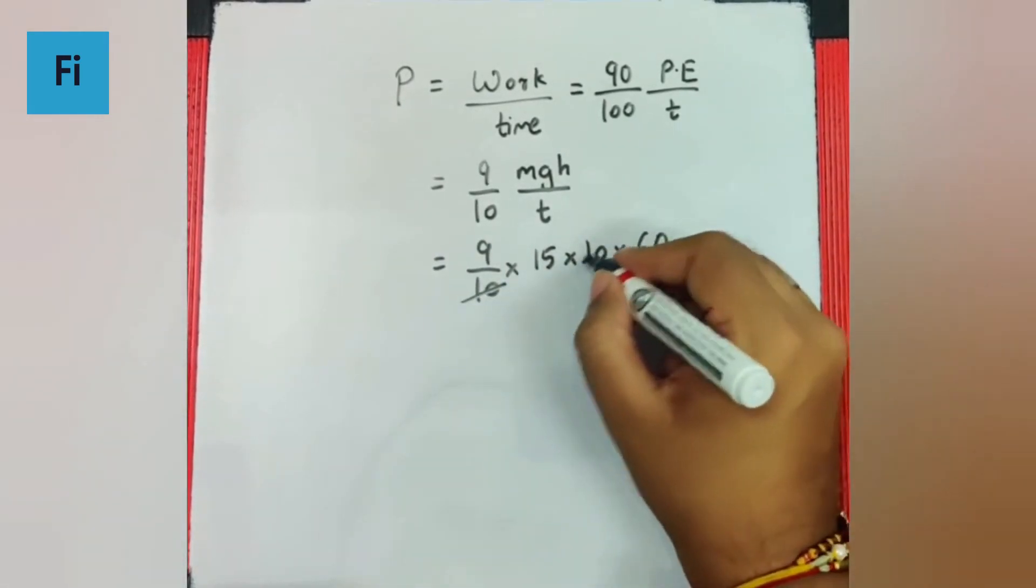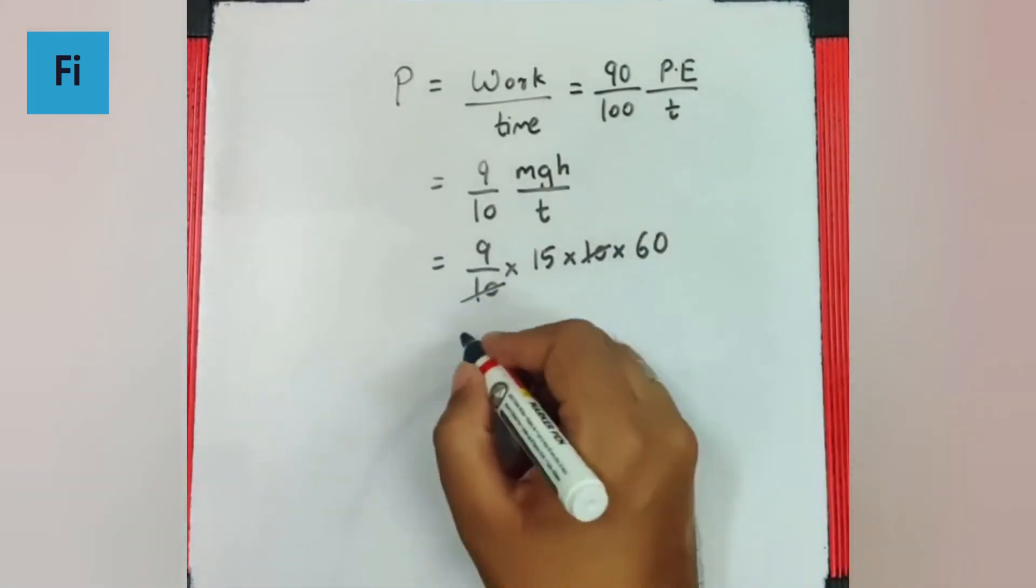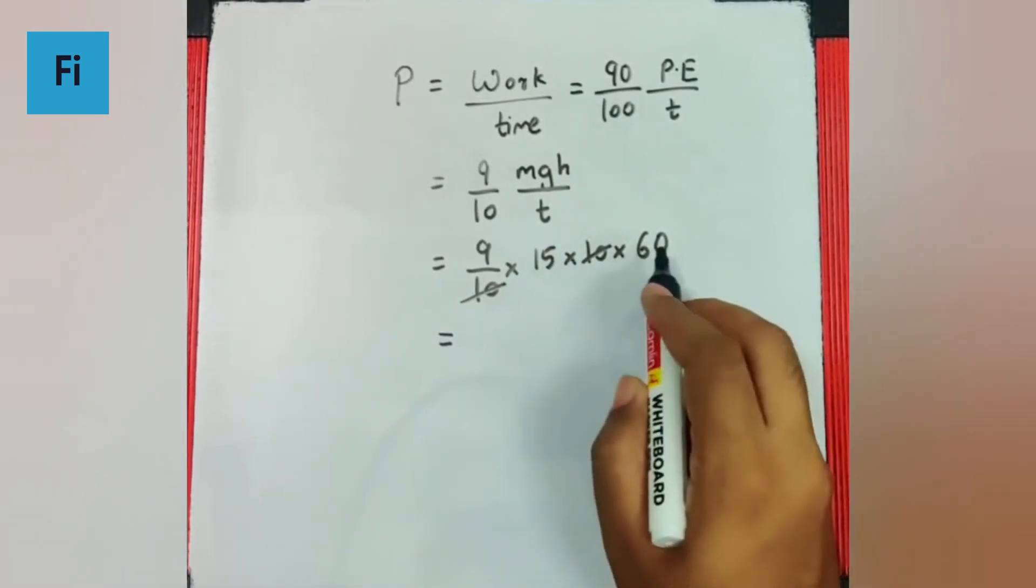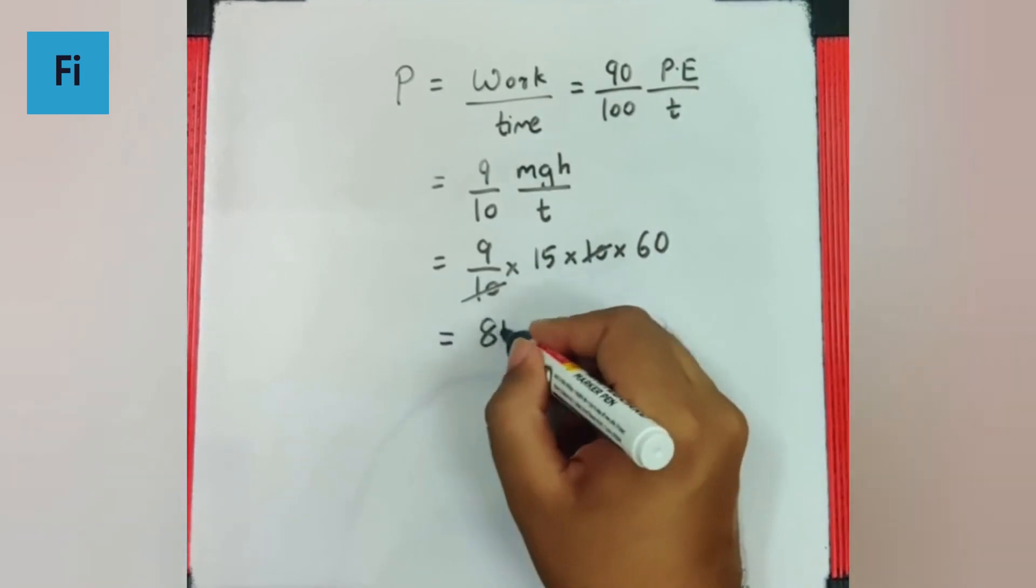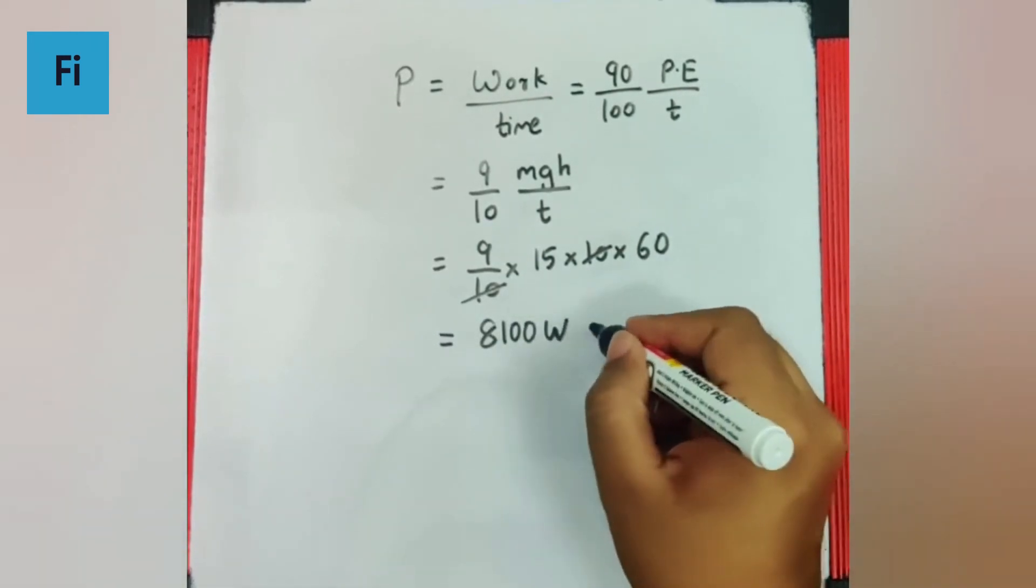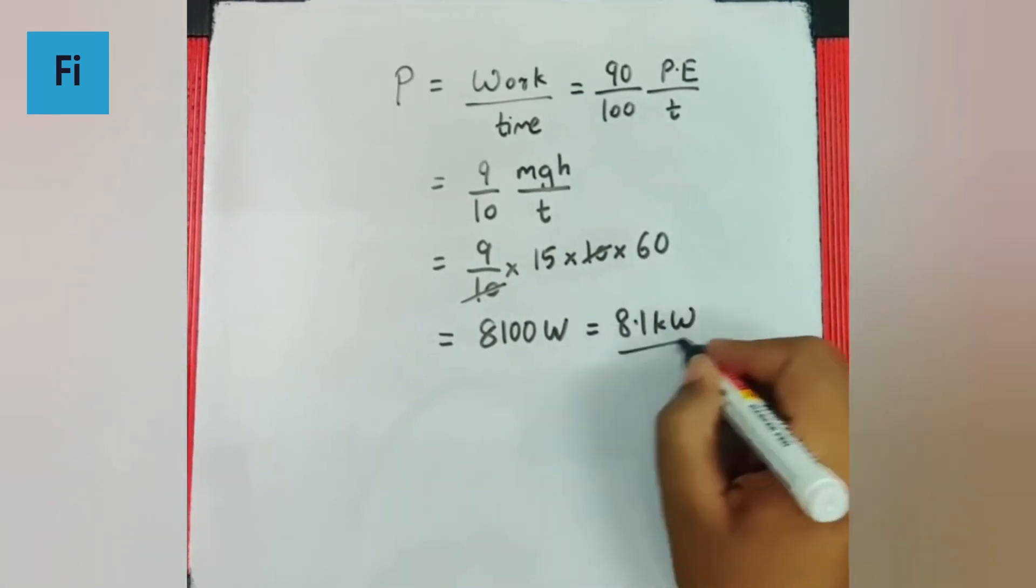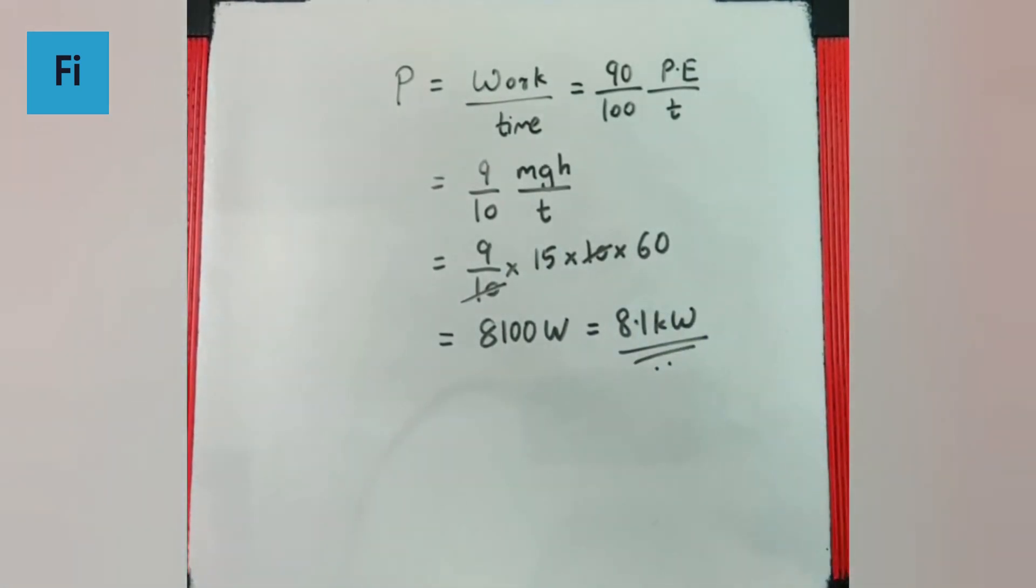So obviously this 10 gets cancelled. Now this is going to be 15 into 60 is 900, 900 into 9 is 8100 Watt or you can call it as 8.1 Kilowatt. This is our final answer.